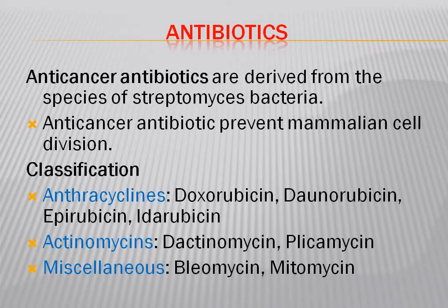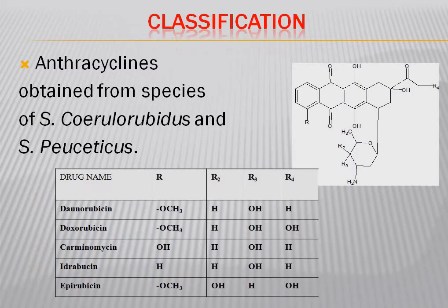Anthracyclines consist of doxorubicin, daunorubicin, epirubicin, and idarubicin. Actinomycins consist of dactinomycin and plicamycin. The miscellaneous category consists of bleomycin and mitomycin. The anthracyclines are obtained from the species Streptomyces peucetius var. caesius and Streptomyces peucetius.